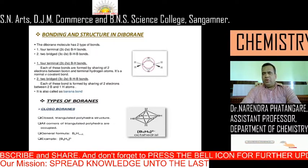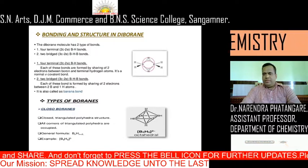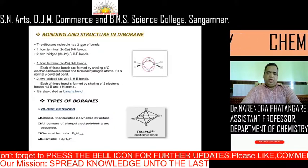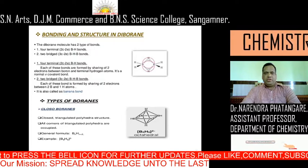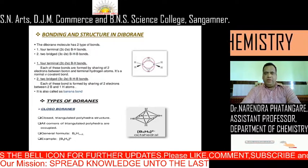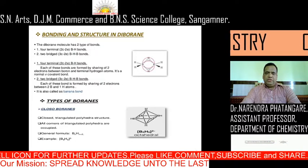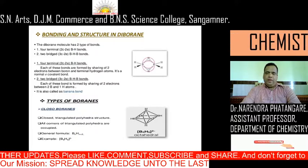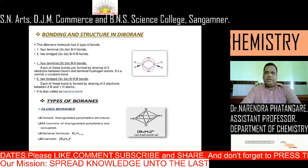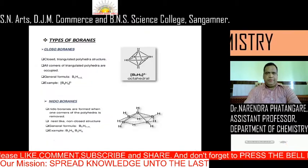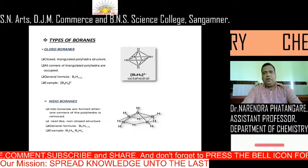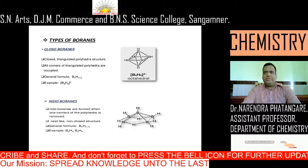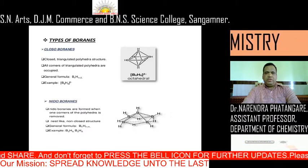There are different types of boranes: closo, nido, and arachno. First, closo boranes have closed triangulated polyhedral structures where all corners of the triangulated polyhedron are occupied. The general formula is BnHn+2. For example, B6H6²⁻ is a closed triangular polyhedral structure.